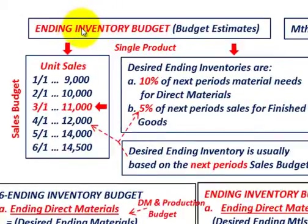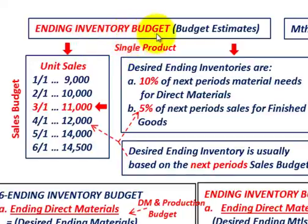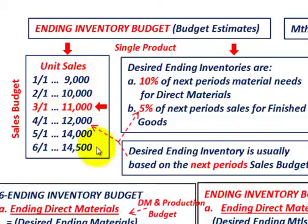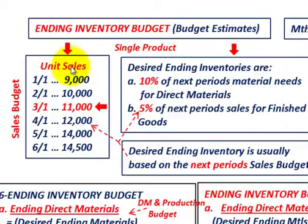For our ending inventory budget calculations, remember these are budgeted estimates. We'll look at a single product for a specific month, but you'd go through all products and all months to get the full total. Starting with our sales budget, for the month of March we have projected unit sales of 11,000 units, and for April, 12,000 units.